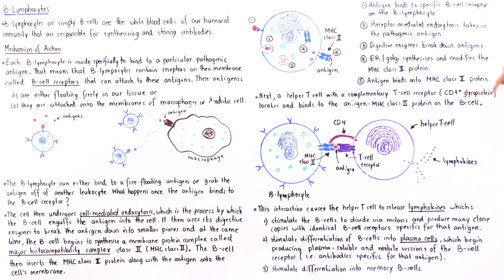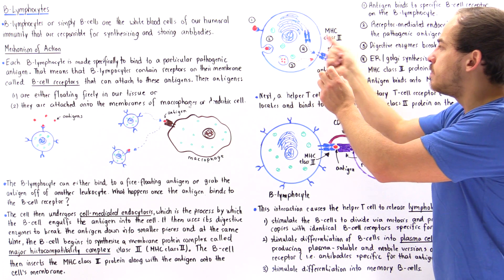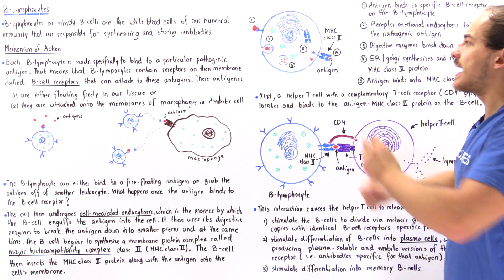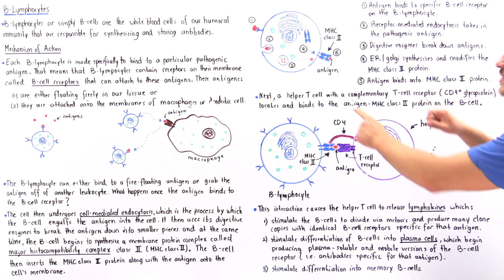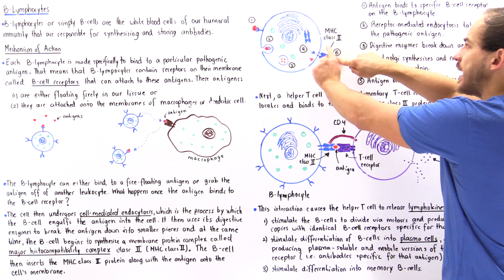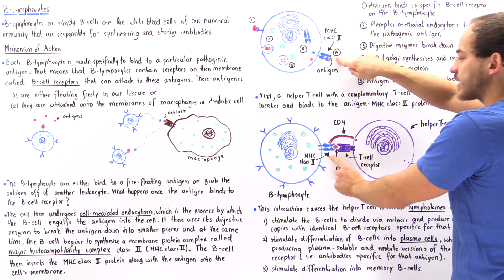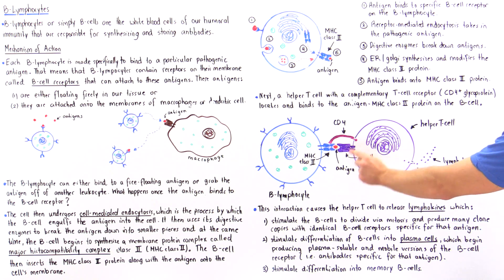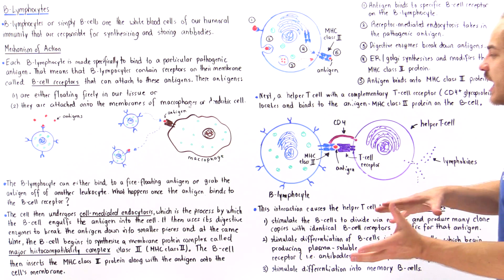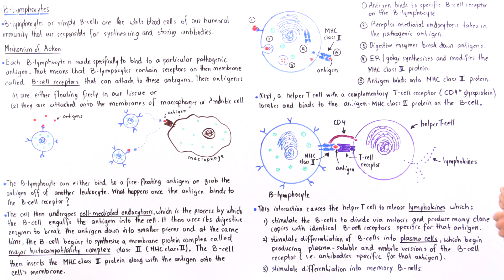The helper T cell must contain the complementary T cell receptor, complementary to this particular section of the antigen and MHC class 2 complex. Also, the helper T cell must have the CD4 glycoprotein to bind and interact with the B cell. Only when a nearby helper T cell contains both the complementary T cell receptor and the CD4 glycoprotein can this binding process take place.